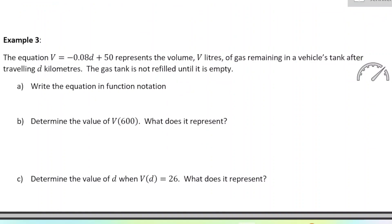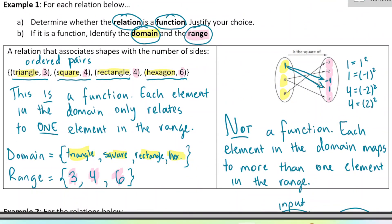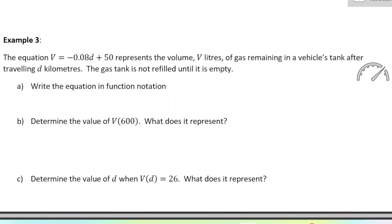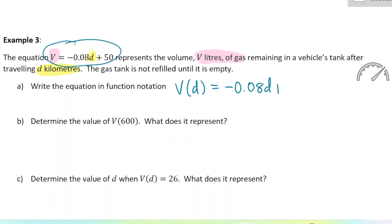Now we're going to see a function represented in equation format. The equation is V equals negative 0.08D plus 50, which represents the volume in liters of gas remaining in a vehicle's tank after traveling D kilometers. The gas tank is not refilled until it's empty. Part A asks: write the equation in function notation. In function notation we write V(D) equals negative 0.08D plus 50 — this means V depends on D. The parentheses do not indicate multiplication.